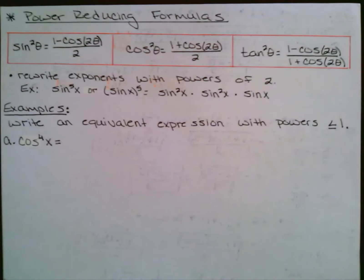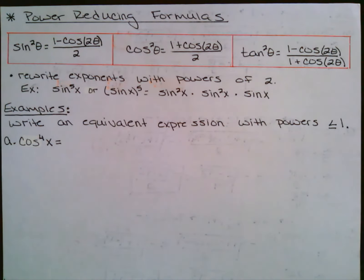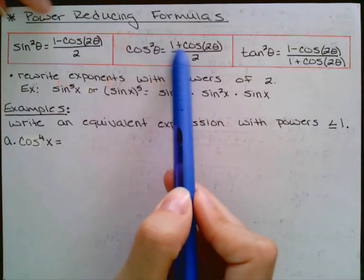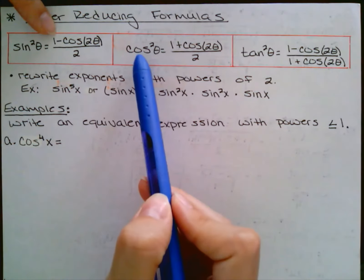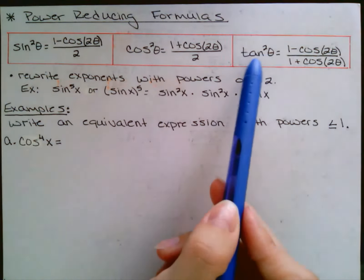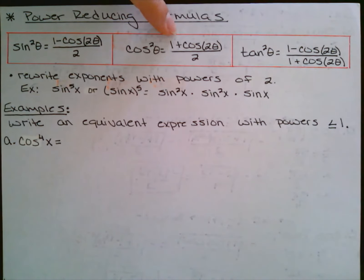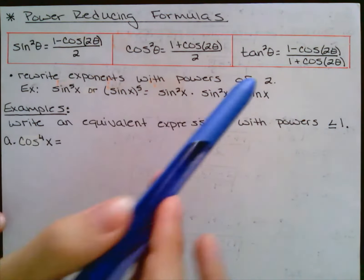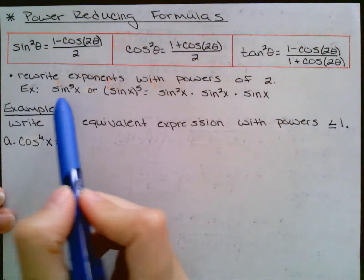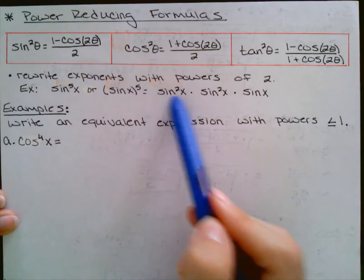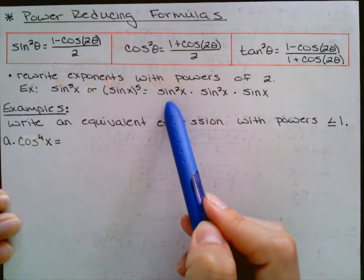And now for our last formula from 5.3 from pre-cal — power reducing formulas. The whole goal here is to end up without any exponents. Sine squared of theta becomes one minus cosine of double theta, all over two. Cosine squared is the same thing but with a plus. And just like last time, tangent had the minus from sine over the plus from cosine. The goal is to rewrite expressions with powers of two so we can use these formulas and end up with no exponents — that's why it's called power reducing formulas.